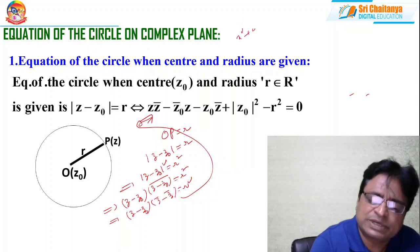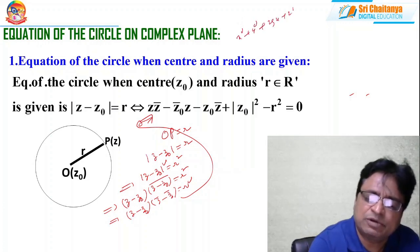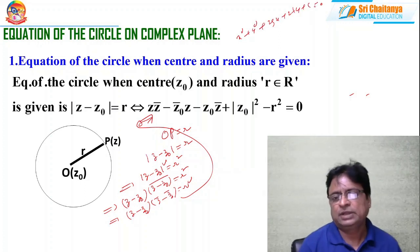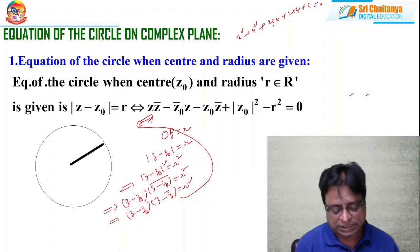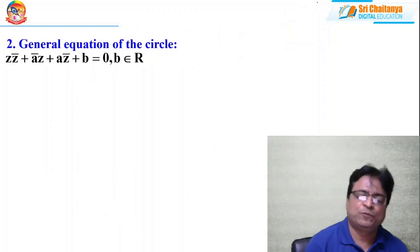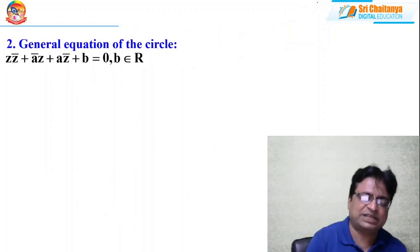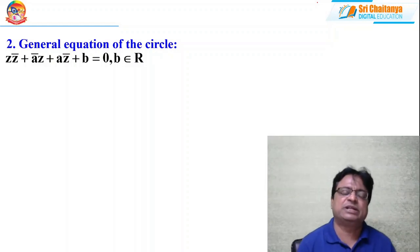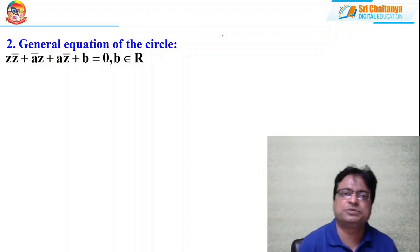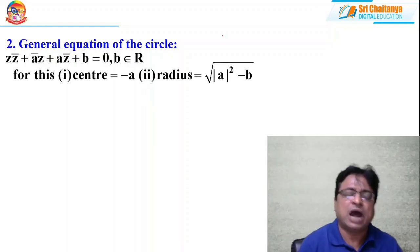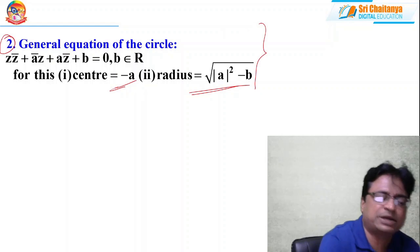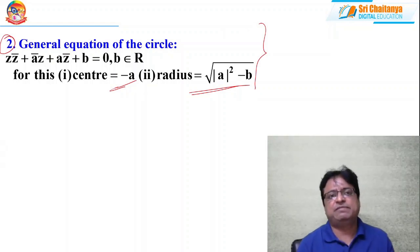This gives the general equation of the circle in the complex plane, analogous to x² + y² + 2gx + 2fy + c = 0 in coordinate geometry. If you substitute z = x + iy and z̄ = x − iy and simplify, you recover exactly x² + y² + 2gx + 2fy + c = 0. The center and radius can be read off from this general form. Please practice — this is very, very important.